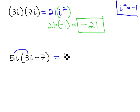5i times 3i is 15i squared, and 5i times negative 7 is negative 35i.